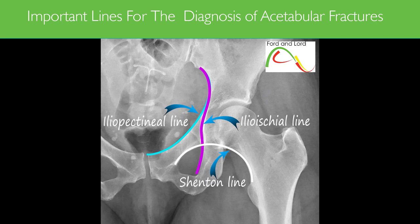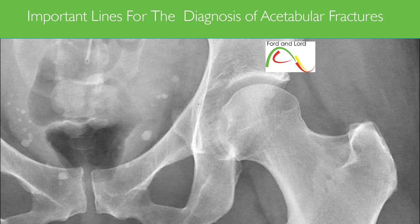Shenton's line is a curved line drawn along the most medial part of the inferior border of the superior pubic ramus. It runs along the inferior medial border of the neck of the femur. All of the lines mentioned should be smooth and uninterrupted. Interruption of Shenton's line can possibly indicate a fracture of the neck of the femur or developmental dysplasia of the hip.